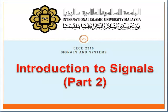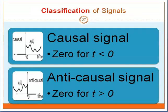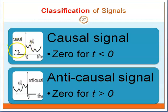Introduction to Signals, Part 2. We're going to continue with the classification of signals. A causal signal is when you have a situation where it is 0 for T less than 0. If you refer to this diagram, the signal starts when T is equal to 0 and you will have nothing on the left-hand side, because it is 0 for T less than 0.